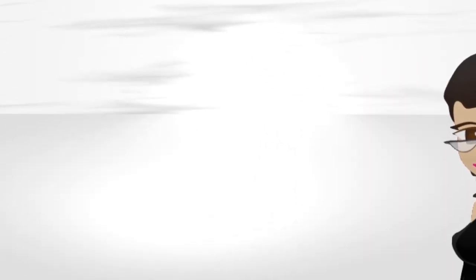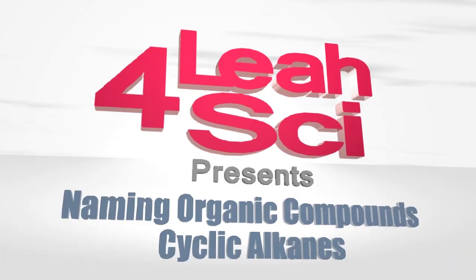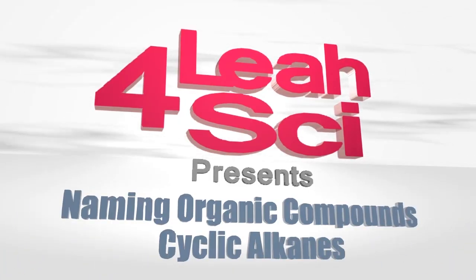Leah here from leah4sci.com and in this video I will show you how to name cyclo and bicyclo alkanes. Cyclic alkanes, commonly referred to as rings, occur when you have a carbon chain where the first and last carbon are fused to each other.